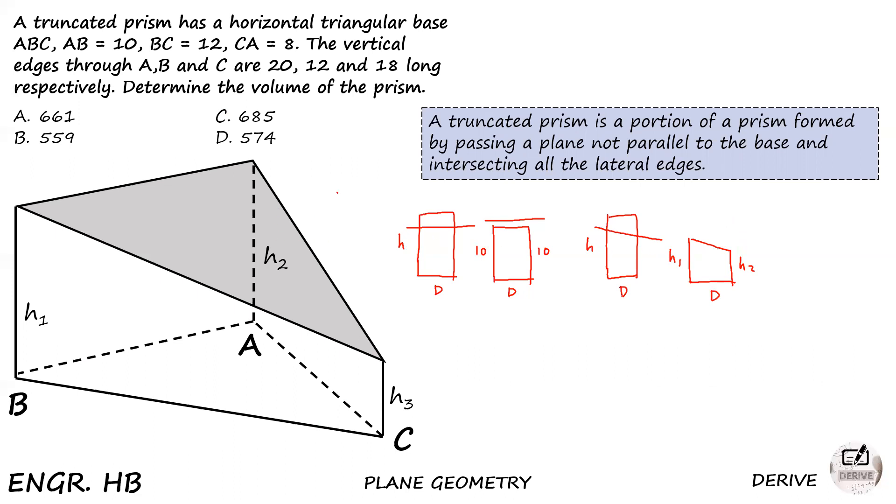However, when the plane passes not parallel to the base, going downward or upward, the result will have a diameter and two different height values: H2 and H1. This has the same situation as our figure, which is why we have H1, H2, and H3. This is a truncated prism because a plane passed not parallel to the base, so we expect three different amounts of vertical edges.